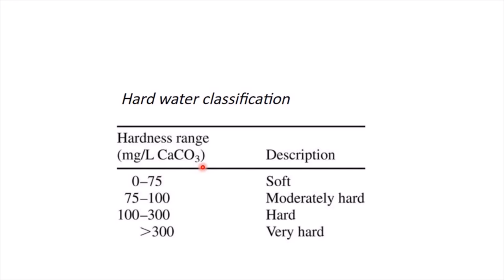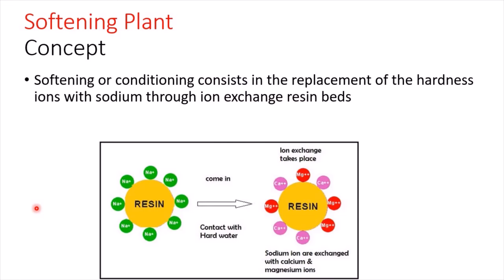Water hardness is classified based on the concentration of calcium carbonate in the water. The water is considered soft when calcium carbonate concentration is between 0 and 75 mg/L; moderately hard between 75 and 100 mg/L; hard between 100 and 300 mg/L; and very hard above 300 mg/L.